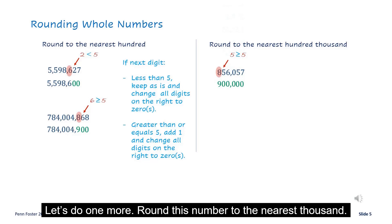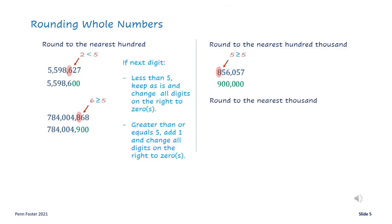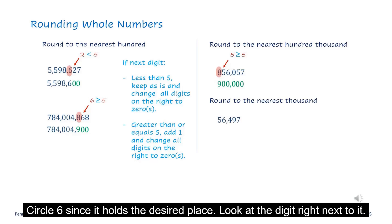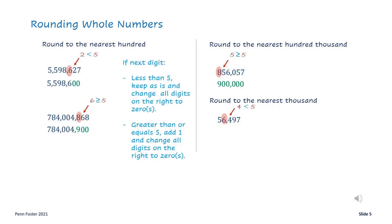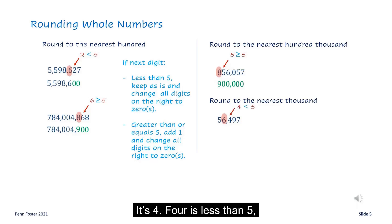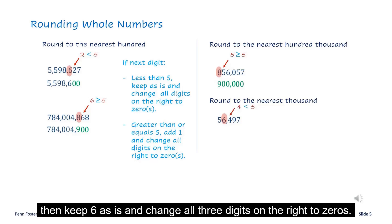Let's do one more. Round this number to the nearest thousand. Circle 6 since it holds the desired place, then look at the digit right next to it — it's 4. Since 4 is less than 5, keep 6 as is and change all three digits on the right to zeros.